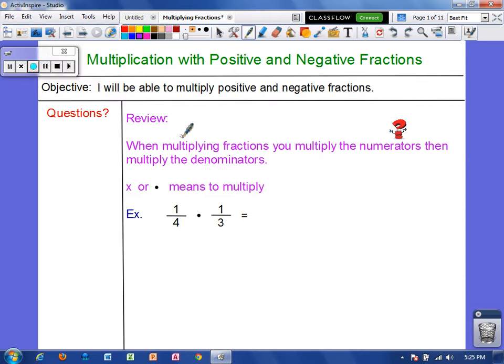So let's review. Whenever we multiply fractions, we simply multiply numerators together, and then we multiply the denominators together. And keep in mind, in multiplication, we may see an x or we may see a dot. Either way, that symbol means to multiply. So let's do an example. 1 fourth times 1 third. I'm going to multiply numerators 1 times 1, which equals 1, and multiply denominators 4 times 3, which equals 12. That cannot be further reduced, so this would just be the final answer.